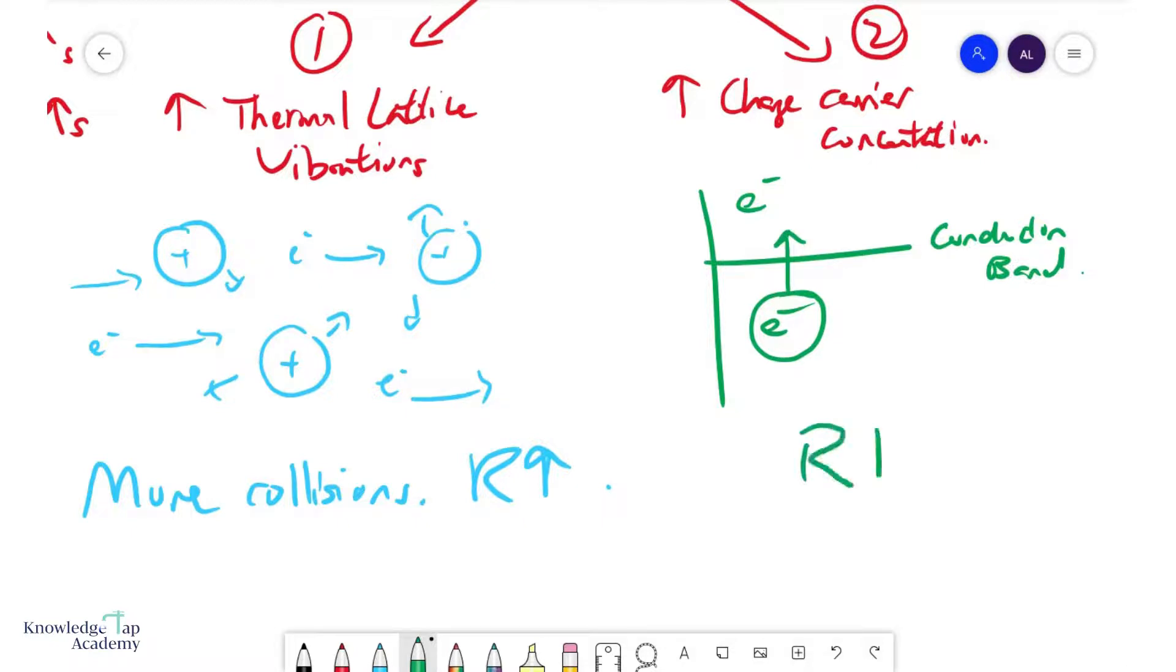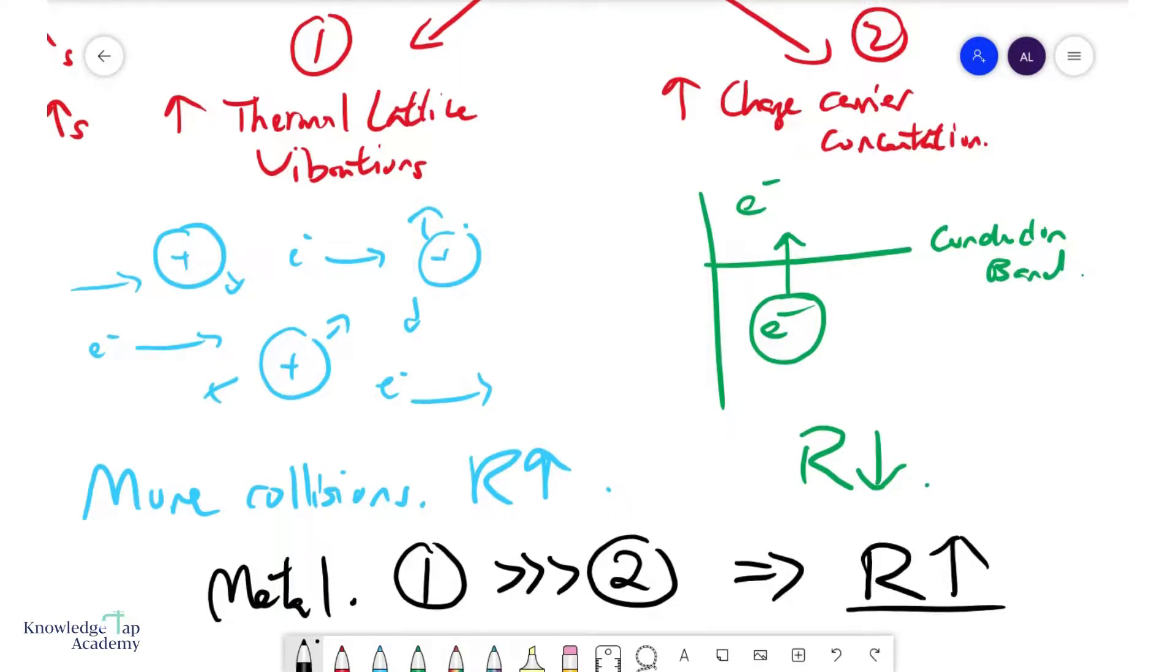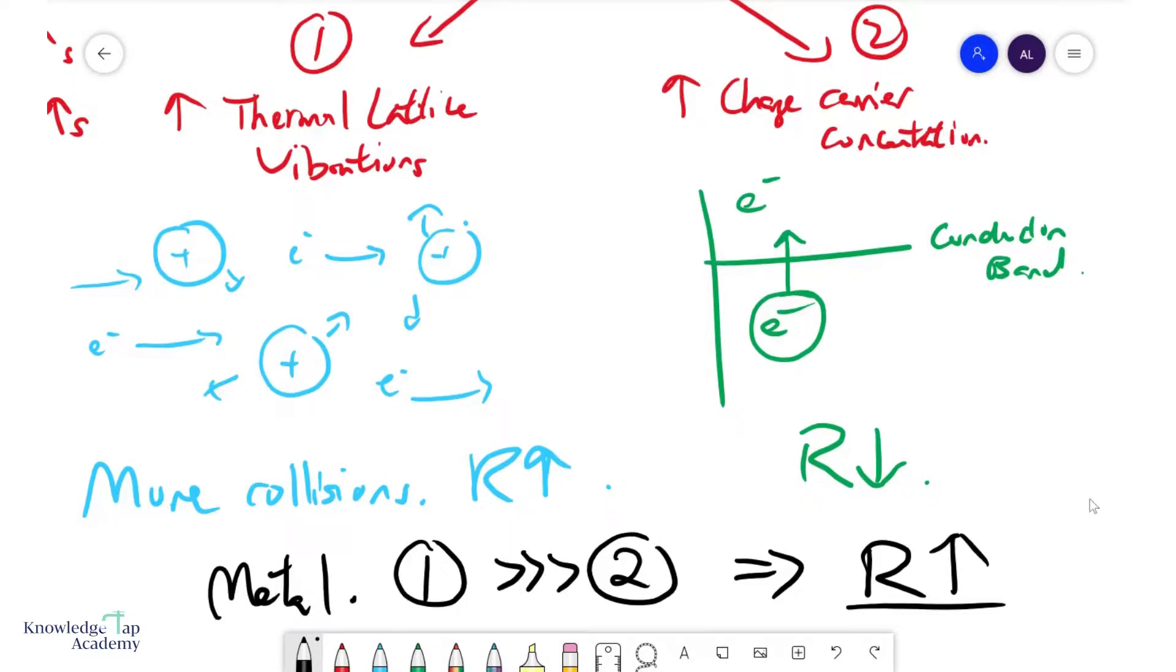What happens in matter is that typically in a metal, or in this case a filament lamp, effect number one is a lot more significant than effect number two, which causes an overall increase in the resistance. The reason why that's the case is because metals inherently already have a large number of electrons in the conduction band.